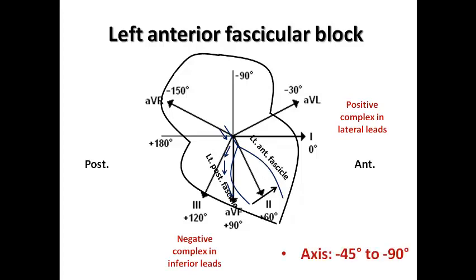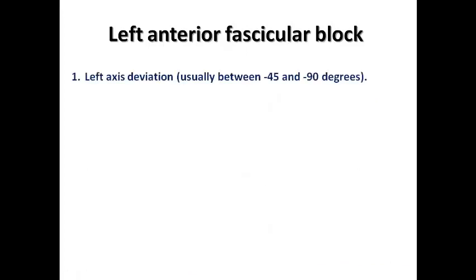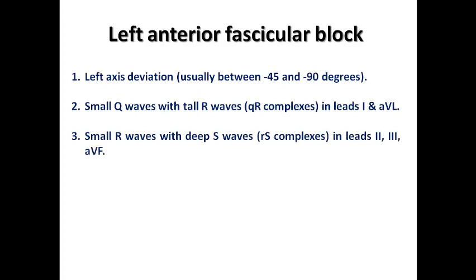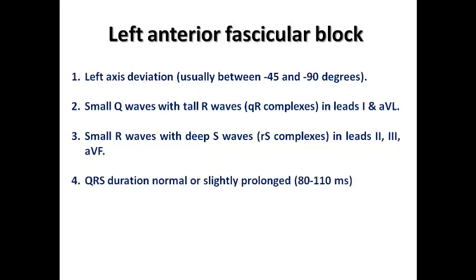The axis in left anterior fascicle block is expected to be between minus 45 degrees to minus 90 degrees in most cases. It is characterized by left axis deviation, with a small Q wave and tall R wave in leads I and AVL because they are predominantly positive, and a small R wave with deep S wave in leads II, III, and AVF. QRS duration is normal or slightly prolonged — not as markedly widened as in bundle branch block — since only one fascicle is involved.